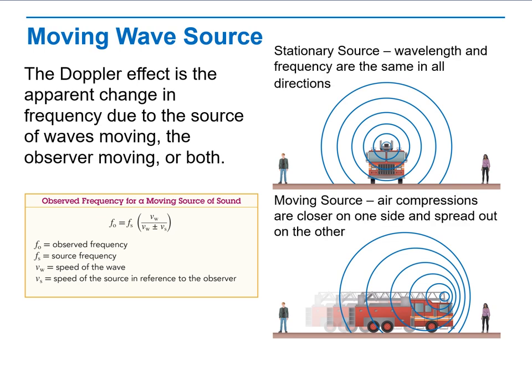Now, stationary source, wavelength, and frequency are the same in all directions, but when the source is moving, air compressions are closer on one side and spread out on the other side.